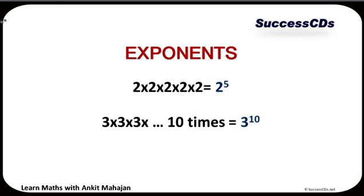Examples: If I multiply the number 2 say 5 times — 2 into 2 into 2 into 2 into 2 — the end result comes out to be 2 raised to the power 5. If I multiply the number 3, 10 times, I can easily write it like 3 raised to the power 10.